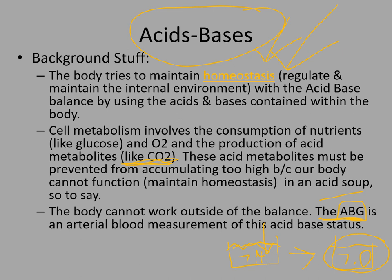The arterial blood gas is still, as of recording this, the benchmark — the hallmark way to evaluate the effectiveness of our therapies and a patient's acid-base balance. It's arterial blood, so blood that hasn't had its oxygen used up or had CO2 added from the tissues yet — blood fresh from the lungs. We use it to see if the patient has an oxygen problem or a ventilation problem, and how severe it is.